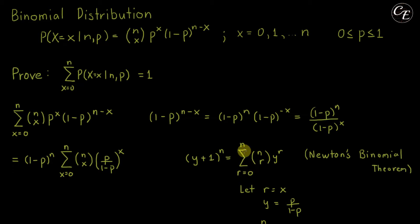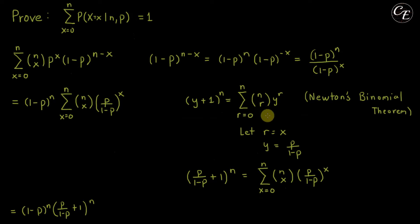Now we can make this summation to be the same with this one so that we can replace this with a form without a summation that is easy to use. Now let r in here to be equal to x, and this y in here to be equal to p over 1 minus p.